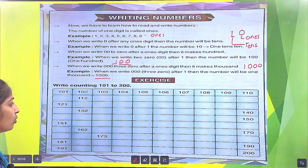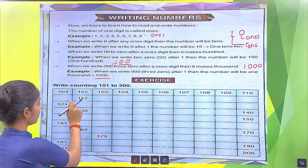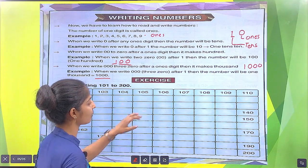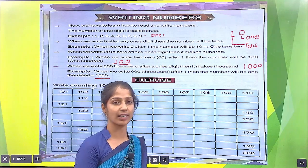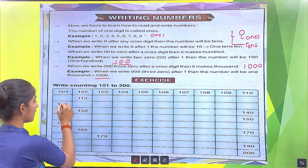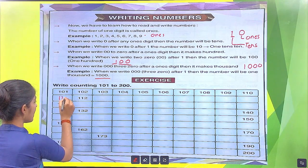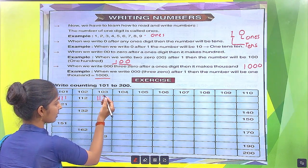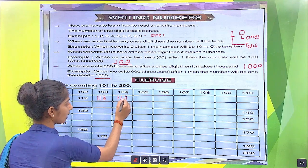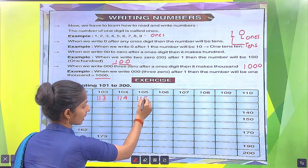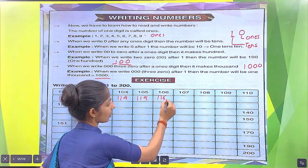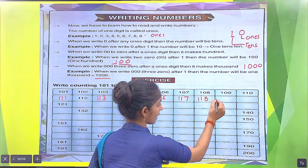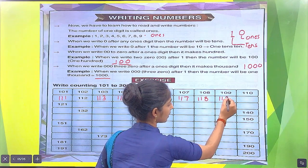Write counting 101 to 200: 101, 102, 103, 104, 105, 106, 107, 108, 109, 110. In the next box, we write 111, 112, 113, 114, 115, 116, 117, 118, 119.